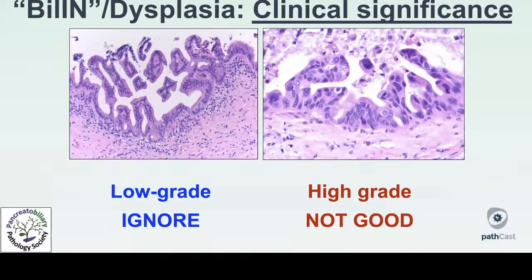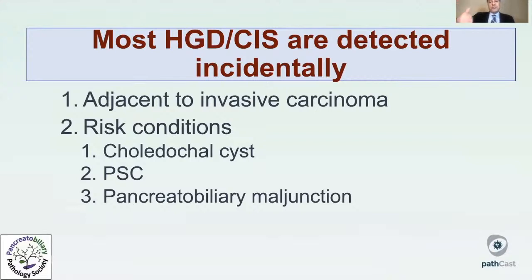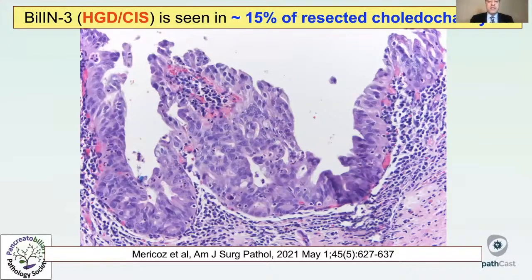High-grade dysplasia often means something significant and is detected incidentally, for instance, next to invasive carcinoma. The question then becomes: is this truly high-grade dysplasia/CIS, or could it be colonization of invasive carcinoma on the surface? We do see convincing examples in risk conditions — lesions or diseases prone to develop cancerous transformation — especially choledochal cysts, primary sclerosing cholangitis, and pancreatobiliary maljunction. In choledochal cysts, about 15% of patients show high-grade dysplasia/CIS-type changes if sampled and examined carefully.